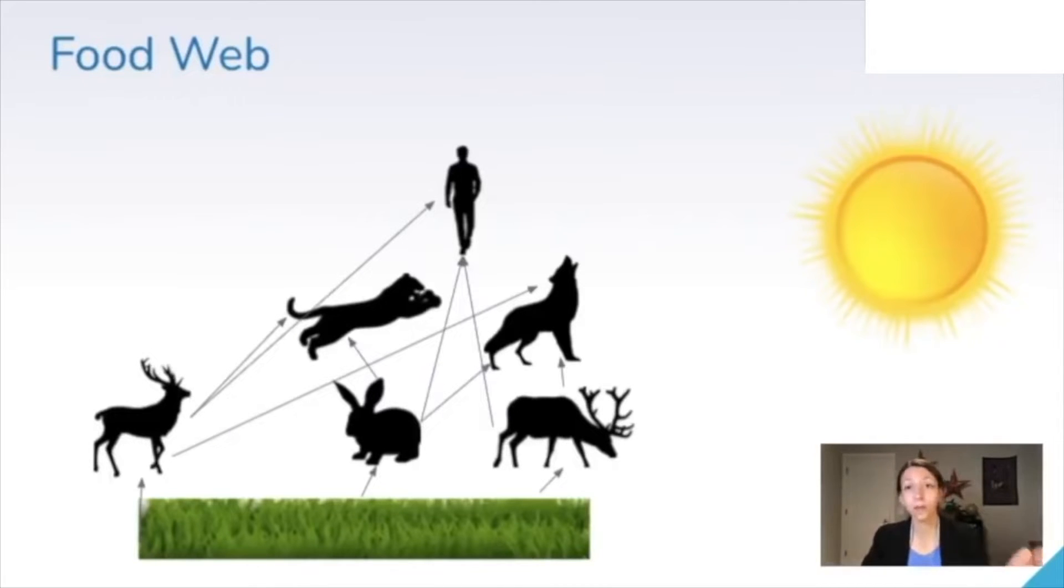Consumers consume the producers and decomposers break down organic material from other organisms. A food chain shows one pathway of energy flow. A food web like you see here can show the interconnectedness of many food chains within a particular ecosystem. Keep in mind that on a food web the arrows always point towards the consumer or the organism that is doing the eating. So here we have the rabbit arrow pointing towards the cougar or mountain lion which means the rabbit is getting eaten by the cougar or mountain lion.